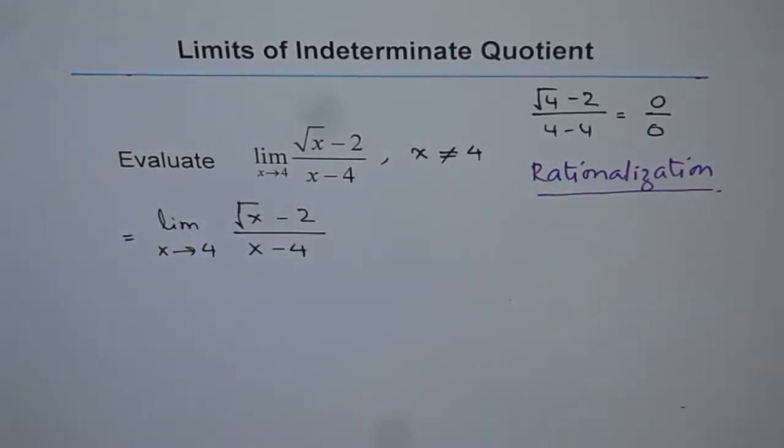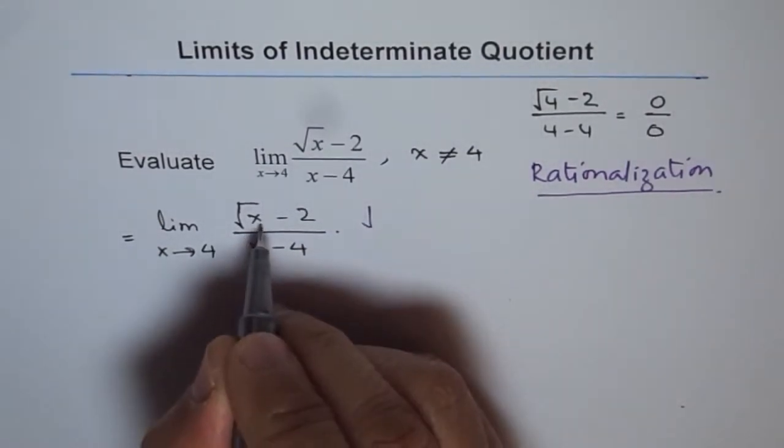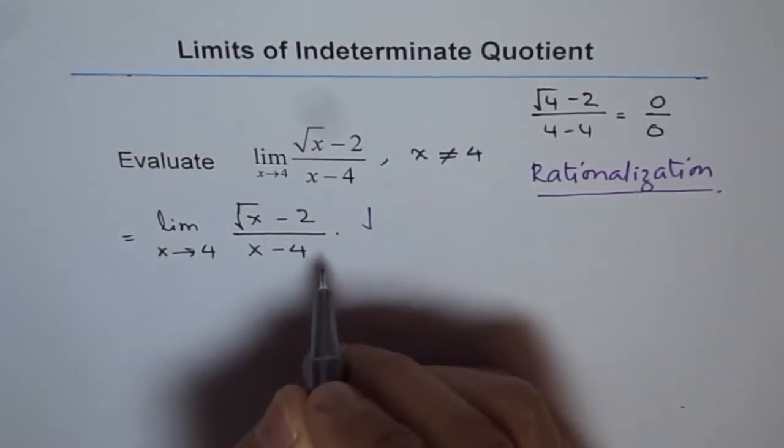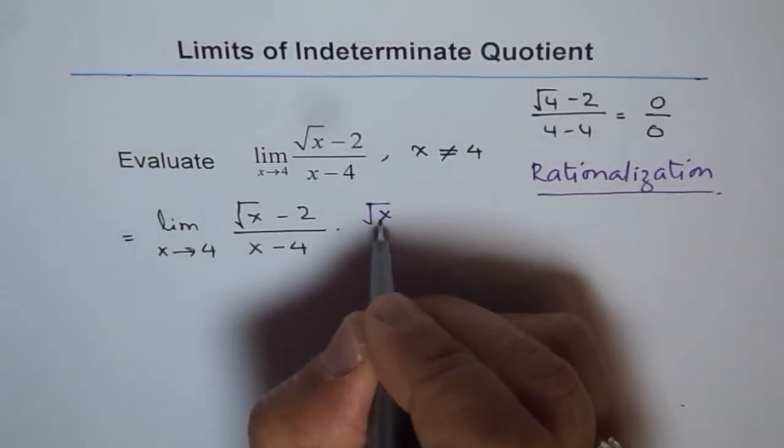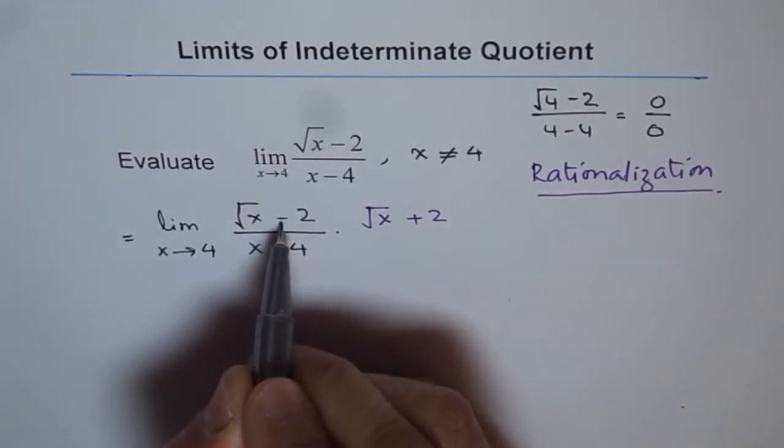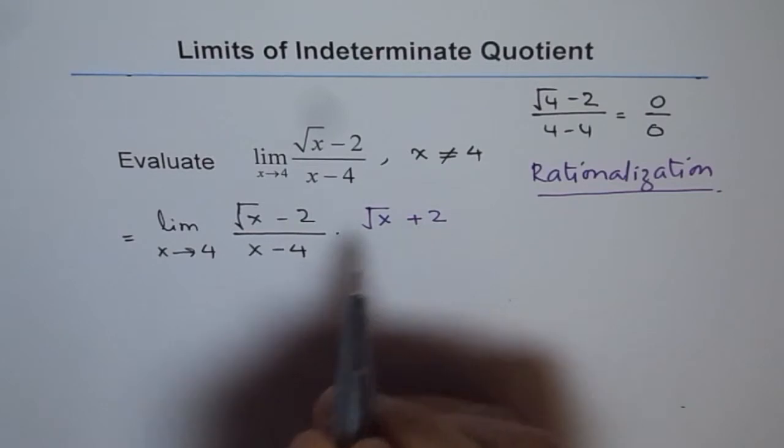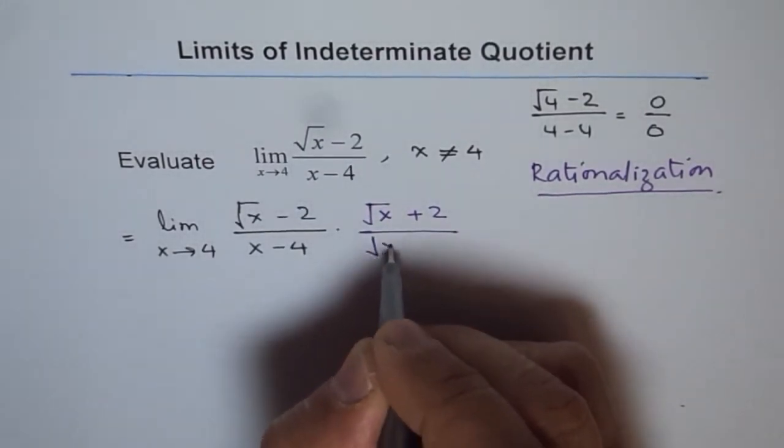It is limit x approaches 4 for square root of x minus 2 divided by x minus 4. And to rationalize, what we are going to do? We are going to multiply and divide by conjugate of numerator. So, we are rationalizing numerator in this case. Square root of x plus 2 is the conjugate.